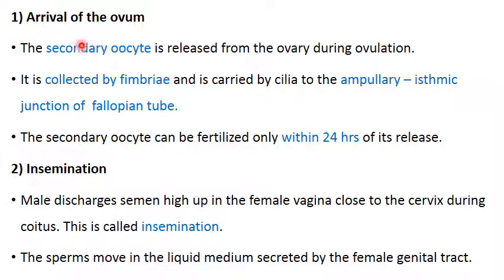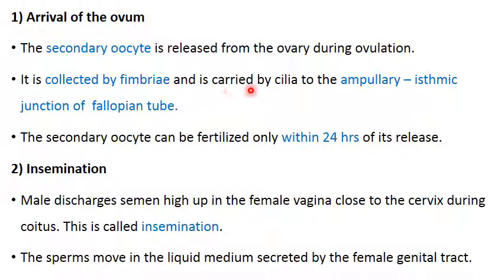The first stage is arrival of the ovum. The egg, as a secondary oocyte, is released from the ovary during ovulation in the middle part of the menstrual cycle, around the 14th day. This secondary oocyte is collected by the fimbriae and passed to the infundibulum. The entire fallopian tube is lined by ciliated epithelium with mucous cells, and ciliary currents transport the egg to the ampullary-isthmic junction. The secondary oocyte can only be fertilized within 24 hours of its release, after which it degenerates.